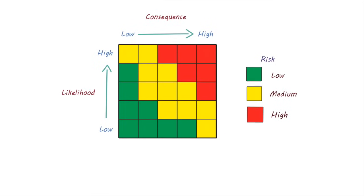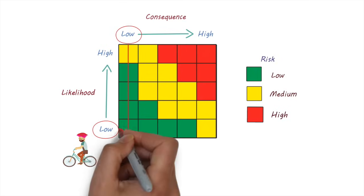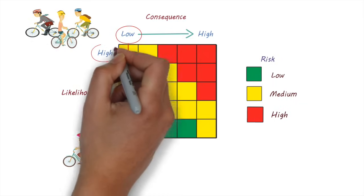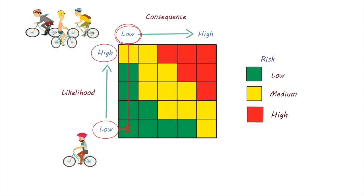So let's get back to our example. In the scenario in which there are bikes traveling very infrequently, the likelihood is low and the consequence is low, therefore the overall risk is low. When there are more bikes, the likelihood is high but the consequence is still low, and therefore the overall risk is medium.